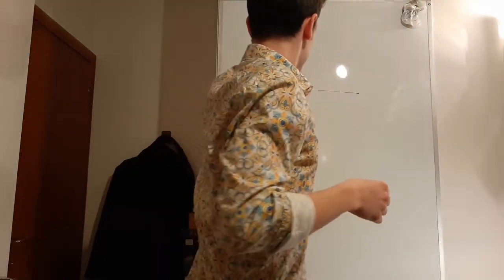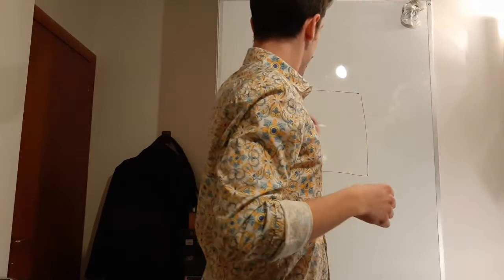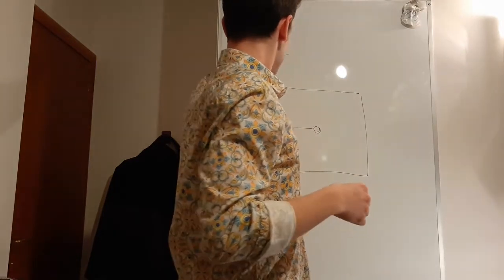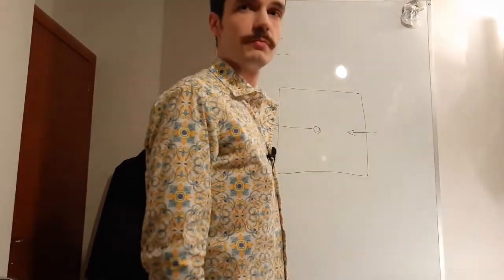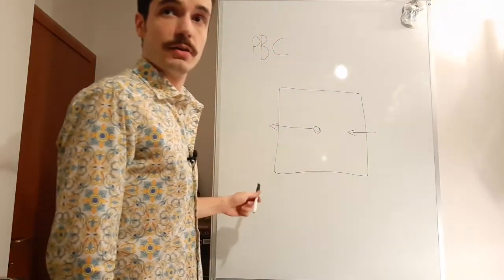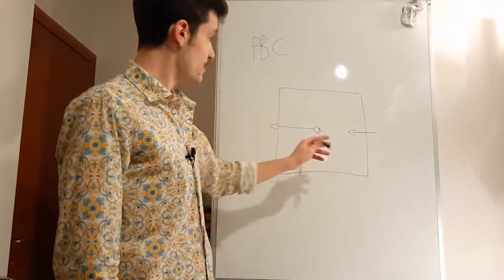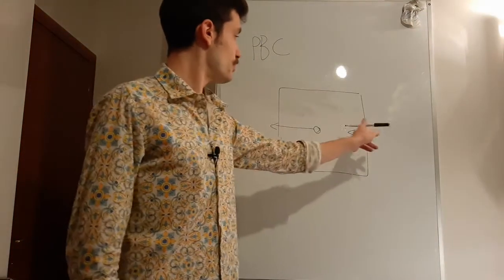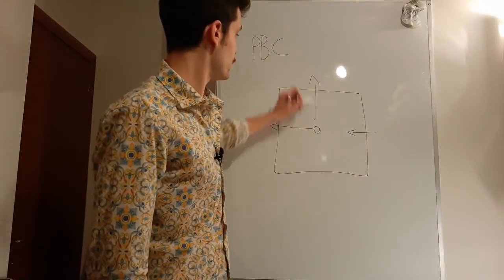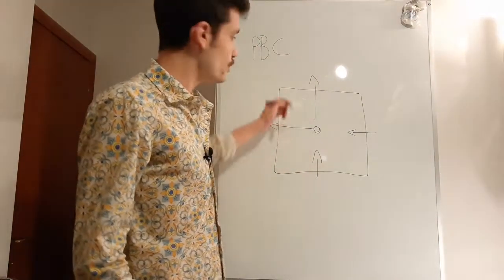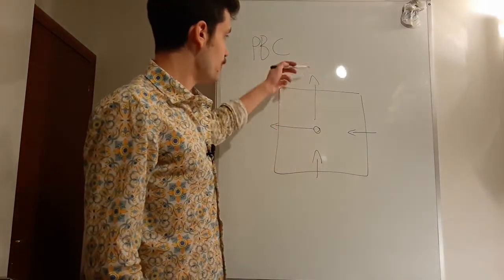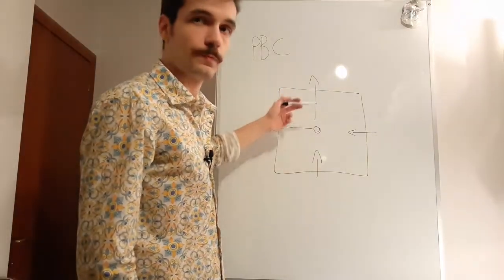Let's stay simple. If I have a particle that goes through the box in this direction, it will simply come in in this one. Do you remember the old video game called Snake? Exactly like that. Where you go out, you go in the other side. If you go out up here, you go in in here. Point. In this way, it's like if it had an infinite space to move.